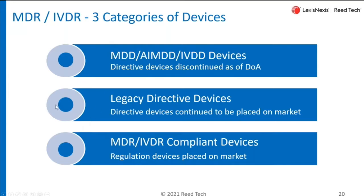Most items in your portfolio are likely legacy directive devices — devices you're currently placing on the market and would like to continue placing after the date of application. There is a transition period of two to three years, depending on whether it's an MDR device or in vitro diagnostic. A couple of criteria apply: the certificate must be valid and not expired, and there can be no significant design changes. As you meet those criteria, you're able to continue placing them on the market, but you do have to register these devices within a specified time period.